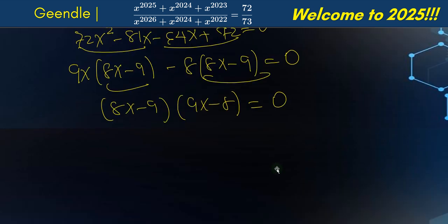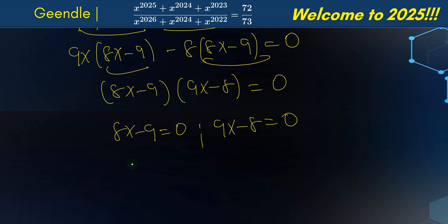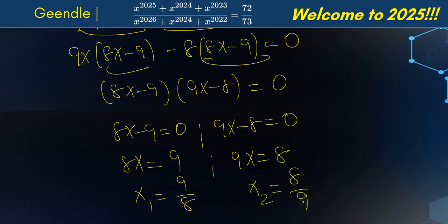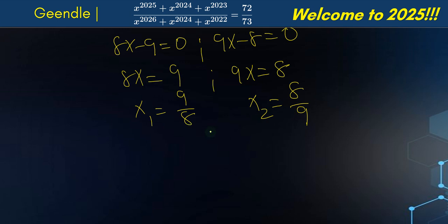This problem was created intentionally to have reciprocal answers. Setting each factor to zero: 8x minus 9 equals 0 gives x1 equals 9 over 8. And 9x minus 8 equals 0 gives x2 equals 8 over 9. So our solutions are x1 equals 9/8 and x2 equals 8/9.